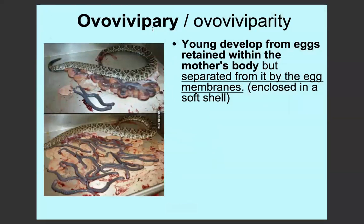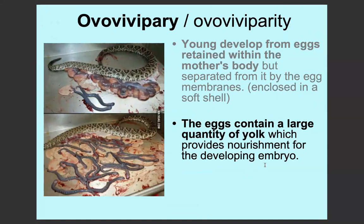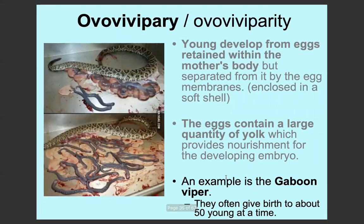Ovoviviparity is where the young develop from eggs retained within the mother's body, but the egg is separated from the mother's body by egg membranes — so it's a soft shell, not a hard shell like in oviparity. The nutrients aren't given completely by the mother because it's separated by an egg membrane. The young get their nutrients from yolk, which provides nourishment for the developing embryo, as opposed to getting nutrients from the mother itself. For example, a gaboon viper gives birth to about 50 young at a time, showing increased chances of survival compared to fish or insects, but still more than one or two offspring like a human would have.